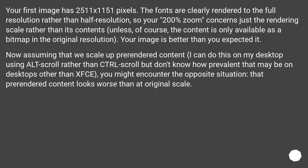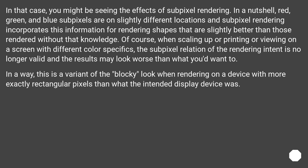You might encounter the opposite situation, where pre-rendered content looks worse than at original scale. In that case, you might be seeing the effects of subpixel rendering. In a nutshell, red, green, and blue subpixels are at slightly different locations, and subpixel rendering incorporates this information for rendering shapes slightly better than those rendered without that knowledge. Of course, when scaling up, printing, or viewing on a screen with different color specifics, the subpixel relation of the rendering intent is no longer valid and the results may look worse. In a way, this is a variant of the blocky look when rendering on a device with more exactly rectangular pixels than what the intended display device was.